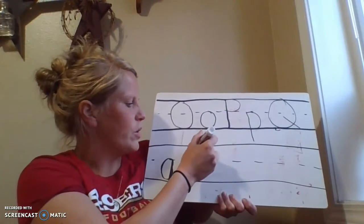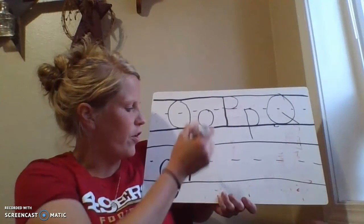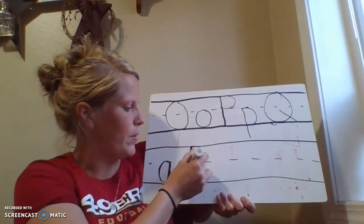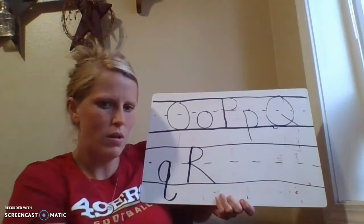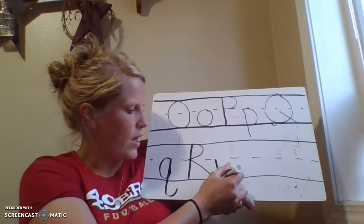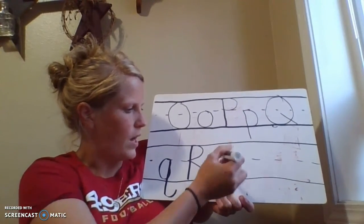And then for an R, we do a straight line down, frog jump to the top, bump on the top, and kick a line down. For our little R, we do a straight line down, helicopter up, and a little curvy line.